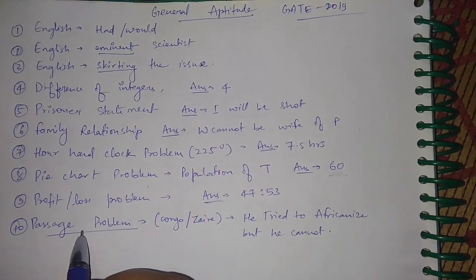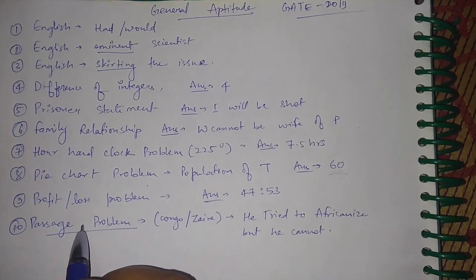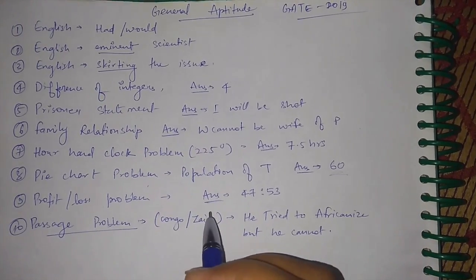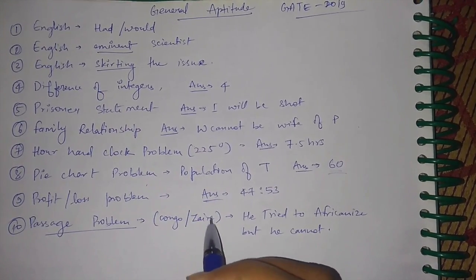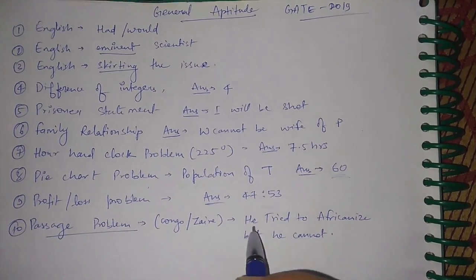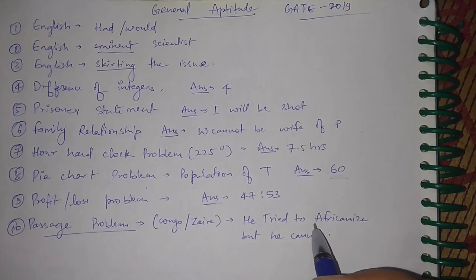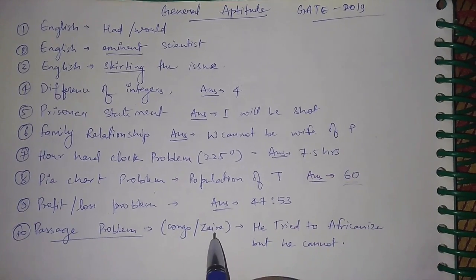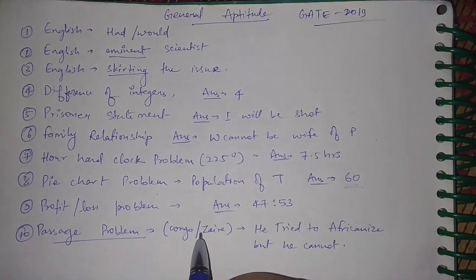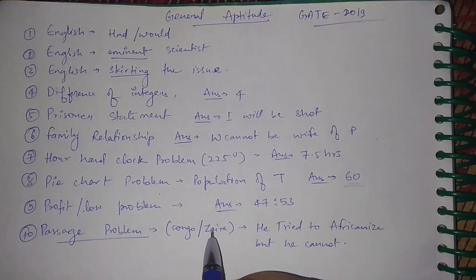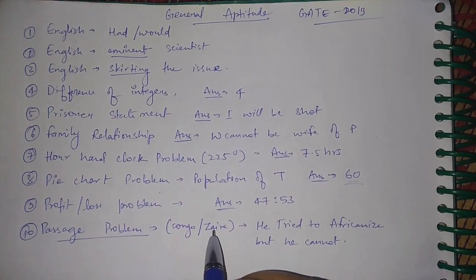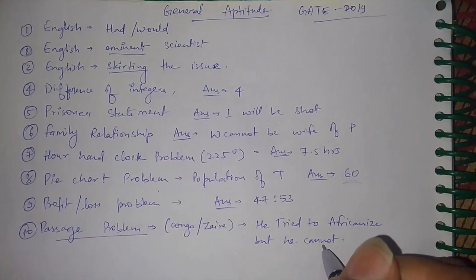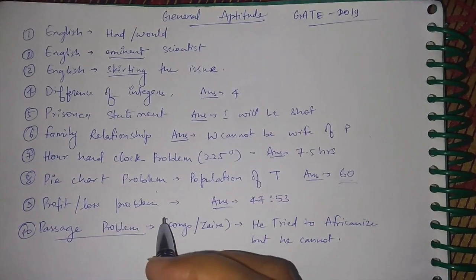The last question was from the English part in passage form. The passage was about a country named Congo which was later named Zaire. The answer should be that he tried to Africanize the name but was not successful, because the word 'Zaire' came from a Portuguese origin, so he was not able to completely Africanize the name. These were the questions from the general aptitude part, and I think these are the correct answers.